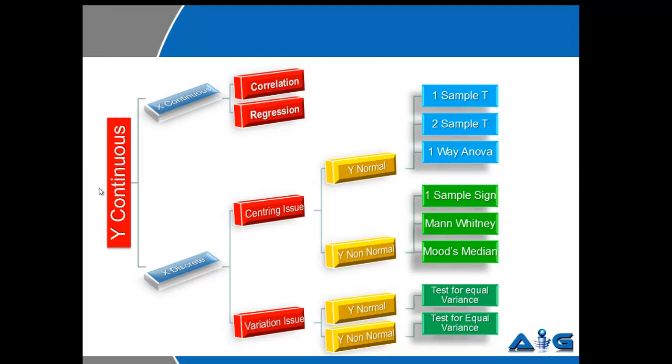If your Y is non-normally distributed, you would look at options of one sample sign, Mann-Whitney, and Mood's Median. Should variation be your issue, again check whether your Y is normal or non-normal. The only option that you may explore here is test of equal variance. Test of equal variance will publish two p-values which we will discuss at length in later videos.